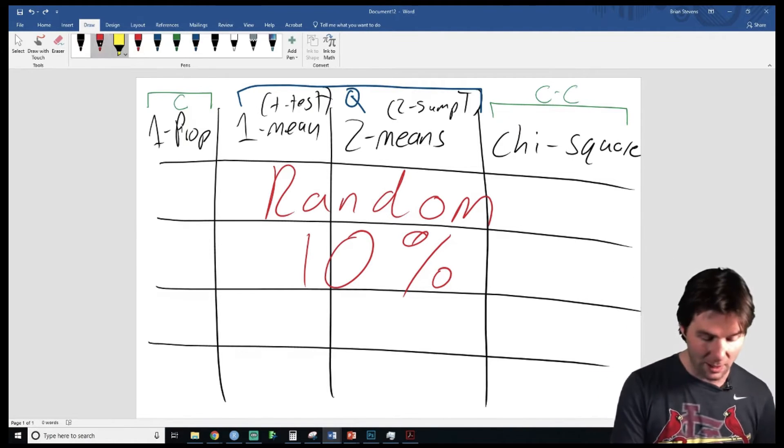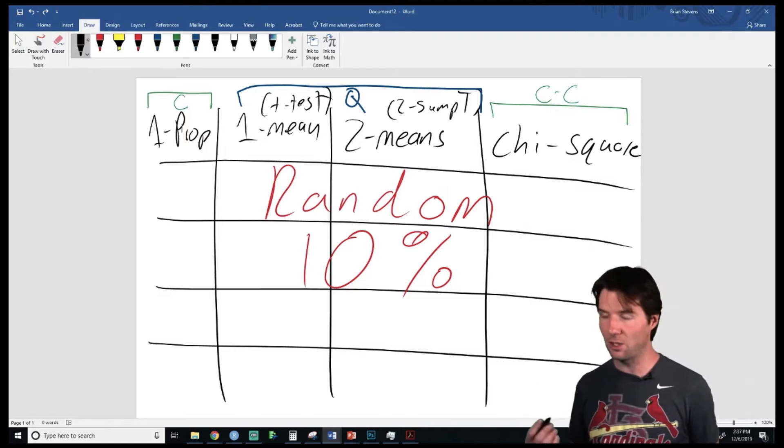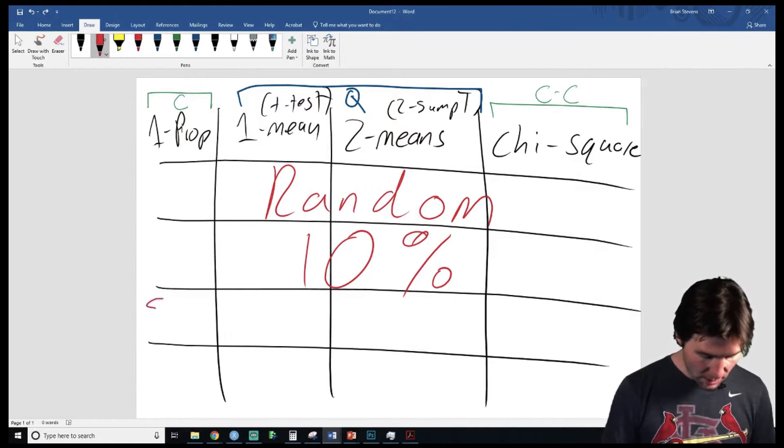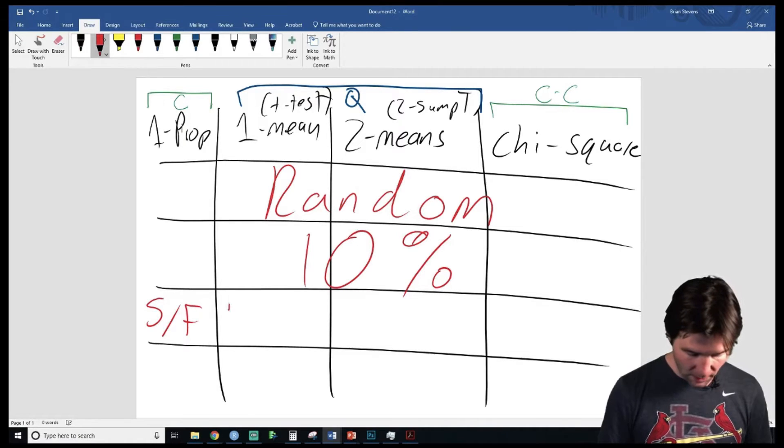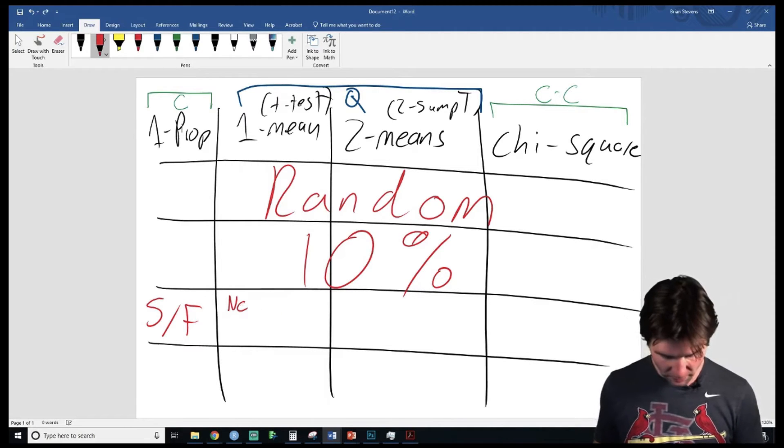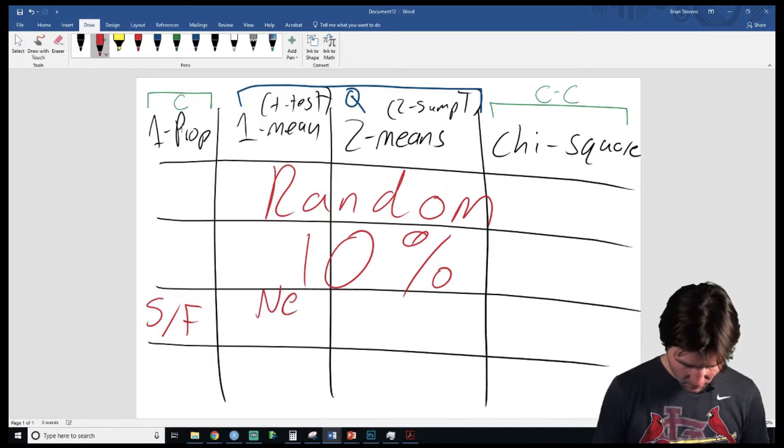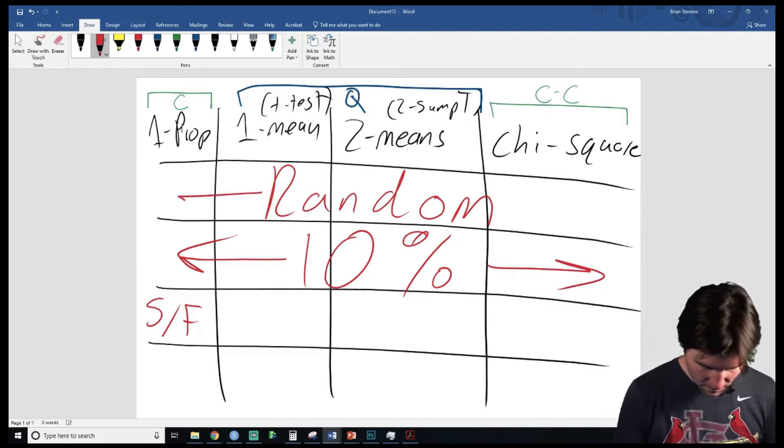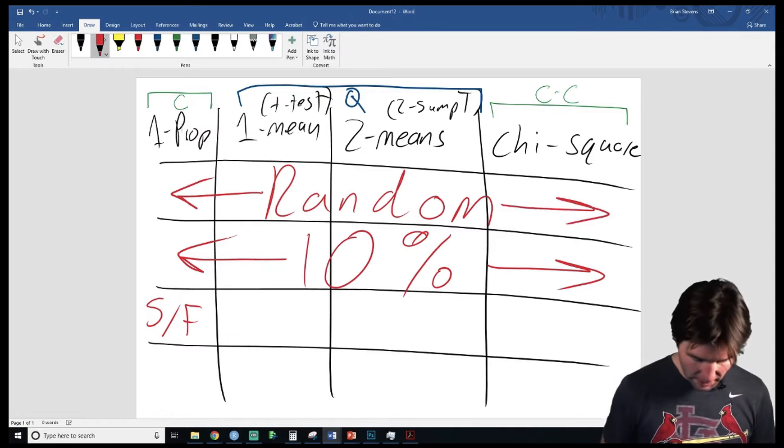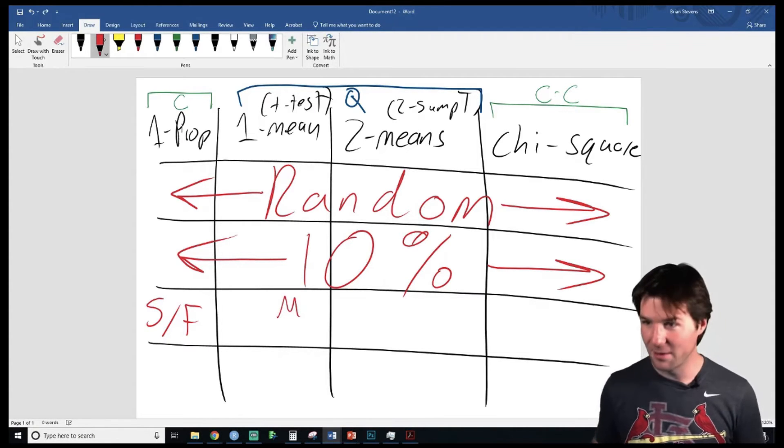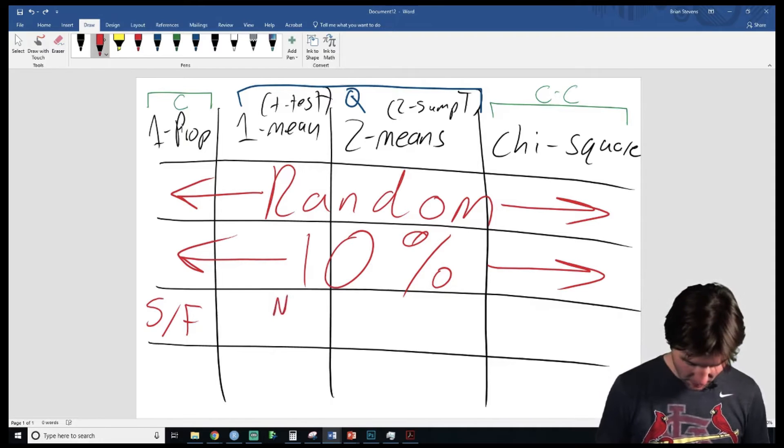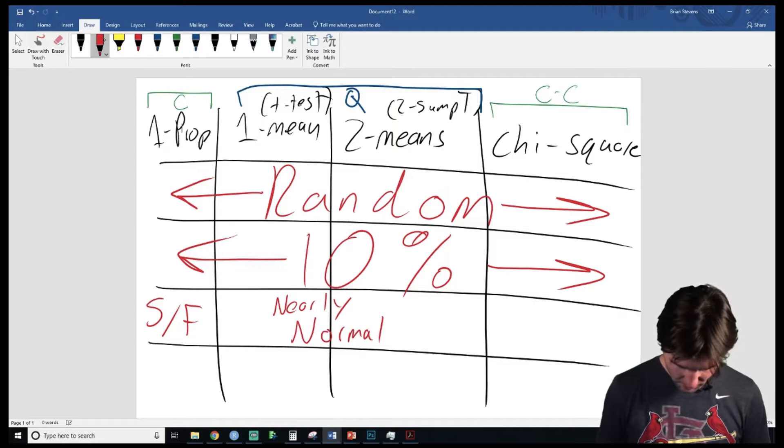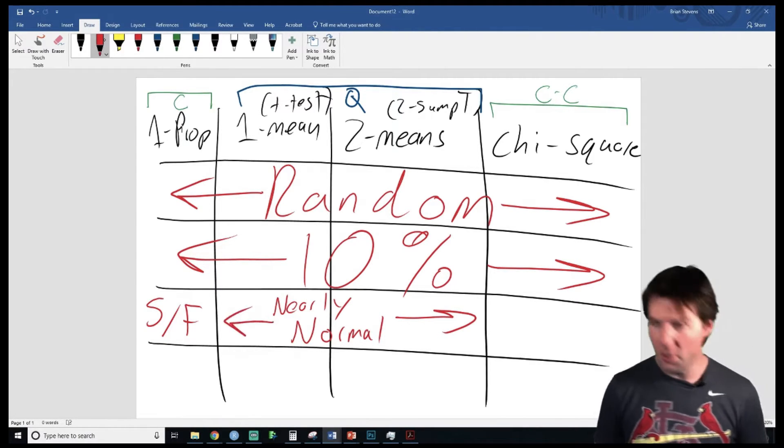When we look at these, we have to understand this because it's going to direct us on the conditions. The conditions right here will be success/failure, and right here will be nearly normal. We can write this across these. I want to make sure it's obvious. And then this would be nearly normal.